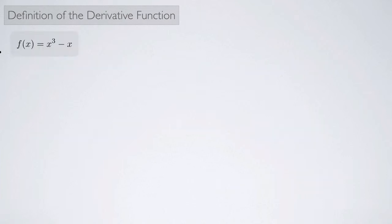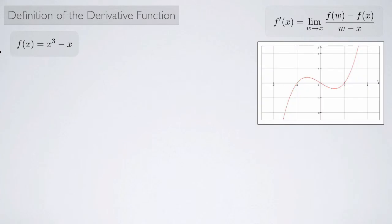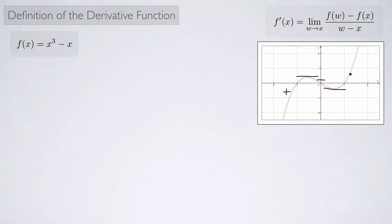Let's apply that alternate definition to f of x equals x cubed minus x. Here's a graph of this function — it has some curves. Before calculating, let's get an idea of what the derivative might look like. We can see horizontal tangent lines at two points, so the derivative should be zero there. To the far left and right the tangent lines look positively sloped, while in between they look negatively sloped.